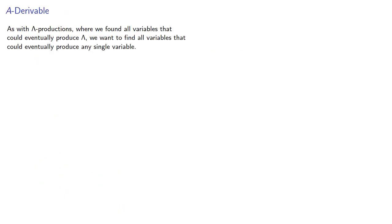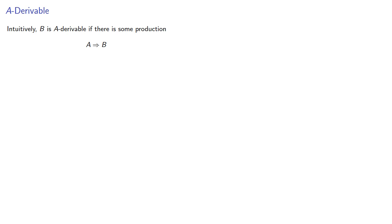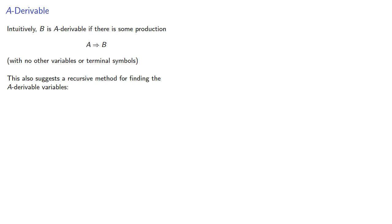As with lambda productions, where we found all variables that could eventually produce the empty string, we want to find all variables that could eventually produce any single variable. A variable is said to be A derivable if either A produces it directly, or something A derivable produces it. Intuitively, B is A derivable if there's some production from A to B with no other variables or terminal symbols.